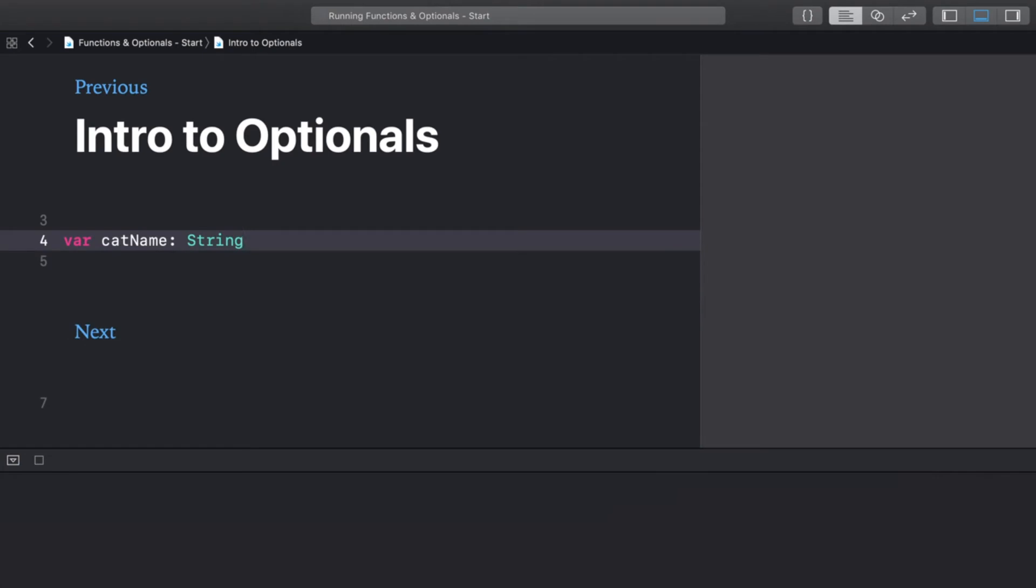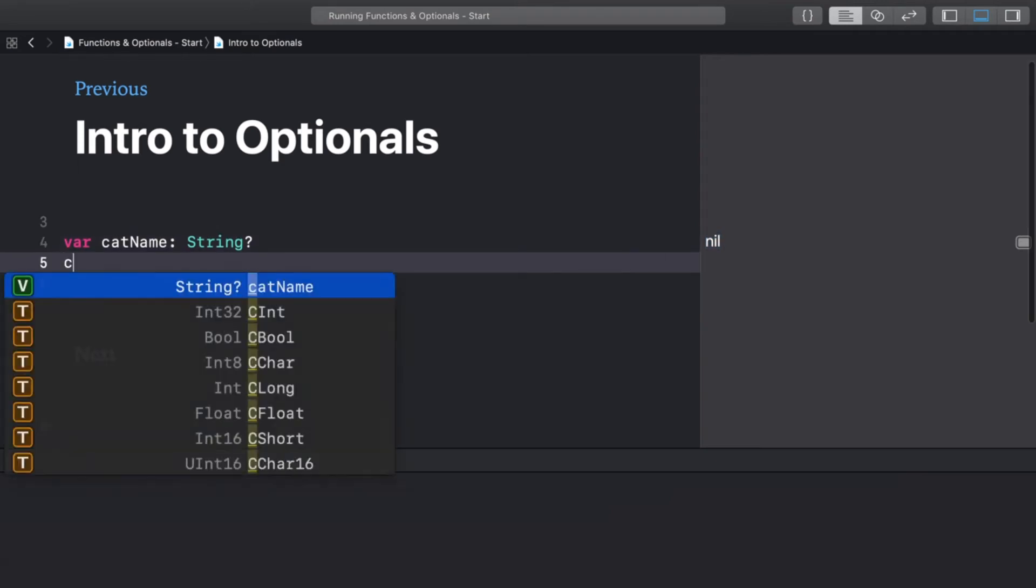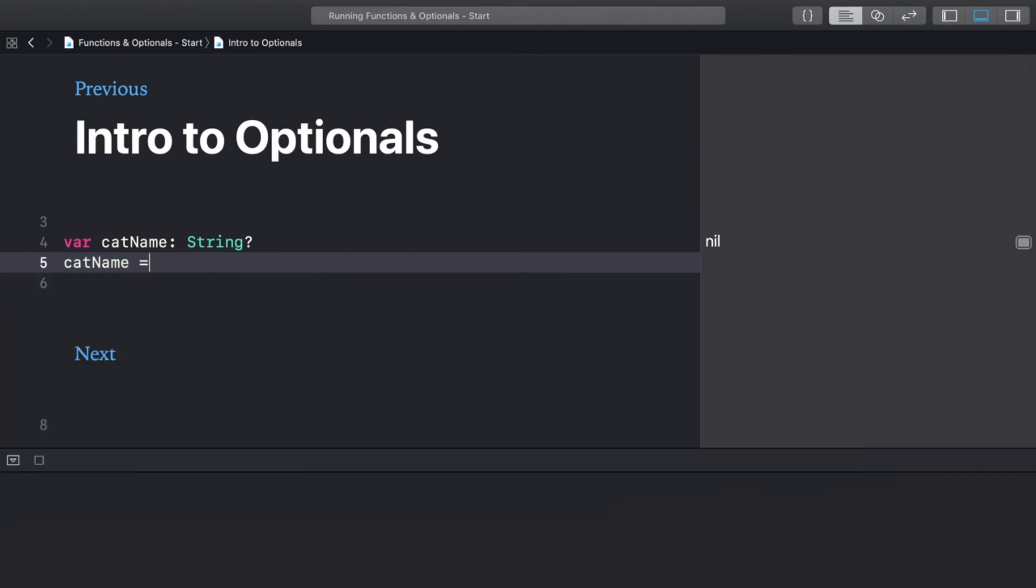To turn this into an Optional string, all you need to do is add a question mark at the end of the type. You can see in the sidebar that if you don't give an Optional a value right away, the default value is set to nil. To make this example less sad, change the value to Princess Ozma. And in the sidebar we see the value is set to Princess Ozma.